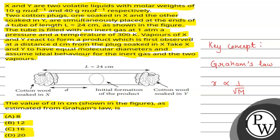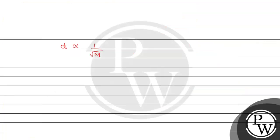So let's see the diagram. For X, we can see the cotton wool soaked in X - our distance is d. And for Y, our distance is L minus d, that is 24 minus d.